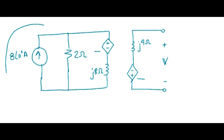In order to minimize the number of meshes, I'm going to do a quick source transformation on that chunk, and that gives us 8 amps times 2 ohms, so we have a 16 volt source in series with a 2 ohm resistor.